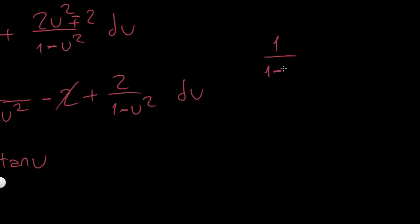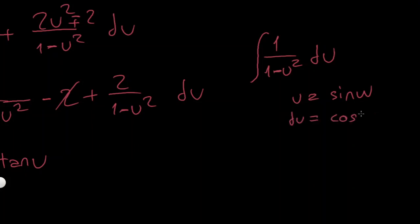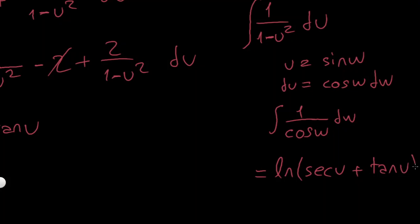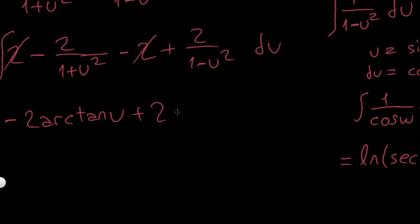This is a bit lengthy so I won't derive it fully here, but the approach is to substitute u = sine of v, so du = cosine v dv and 1 minus u squared becomes cosine squared v. The integral becomes 1 over cosine v, which is the secant integral. Multiplying numerator and denominator by (sec v + tan v), the result is ln|sec v + tan v|. So this part of our integral is 2 ln|sec u + tan u|.